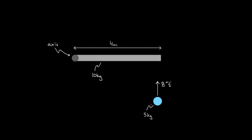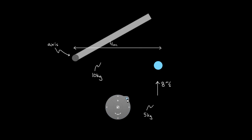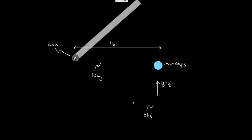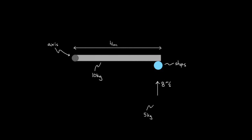The ball comes in and hits a rod. The ball has a mass of five kilograms, going eight meters per second, and it hits the end of the rod. The rod is ten kilograms and four meters long with uniform density, so it can rotate around its end. We'll assume that when the ball hits the rod, the ball stops — so after the collision, the ball is at rest and the rod moves on with all the angular momentum the ball had.